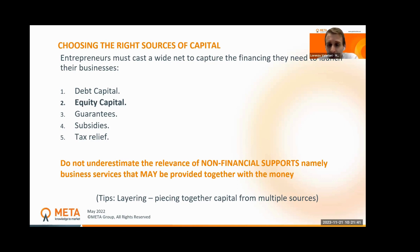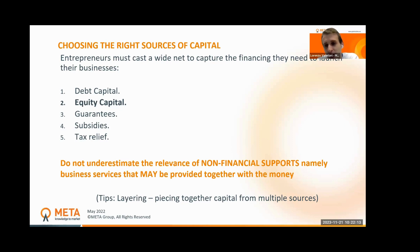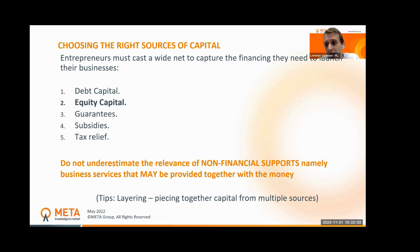There are also guarantees — in Italy, for example, public bodies guarantee startups when raising money from banks, helping them access debt capital. Then there are subsidies and grants: national agencies, public parties, and European programs like Horizon Europe. Grants are money you don't need to repay. Horizon Europe, for instance, provides an 80% advanced payment of your consortium budget, with the remaining 20% paid after the reporting period — very useful because you're not selling equity or repaying debt.